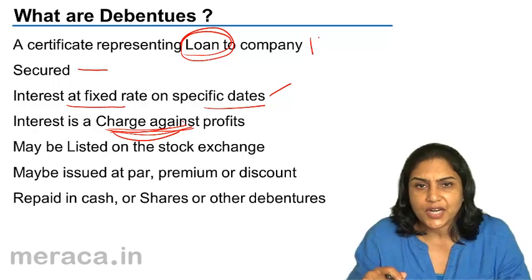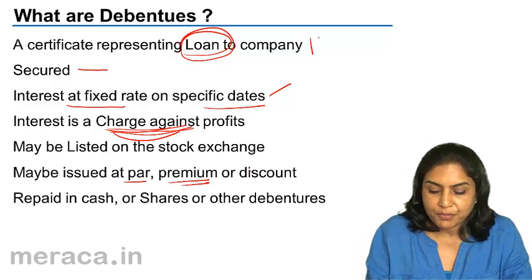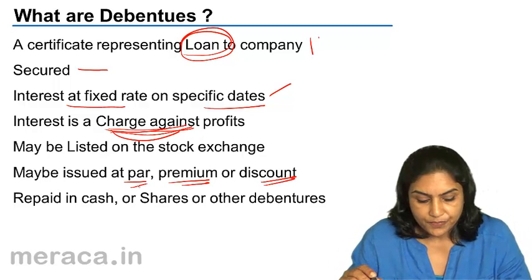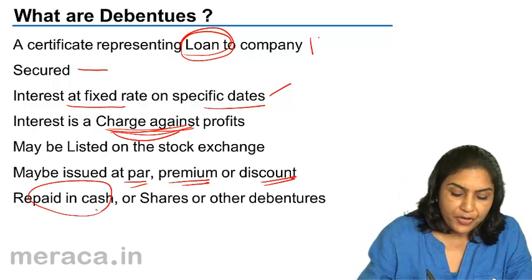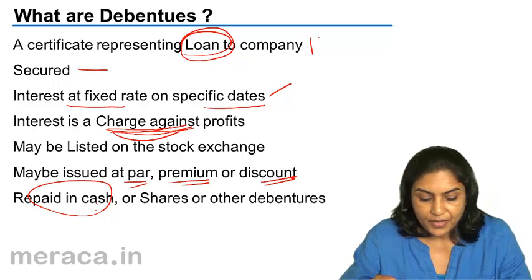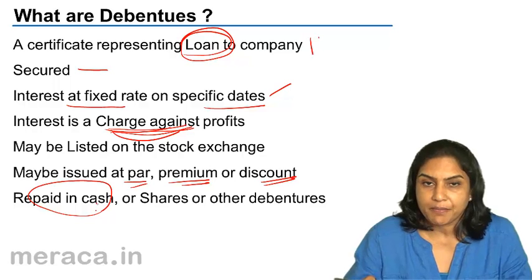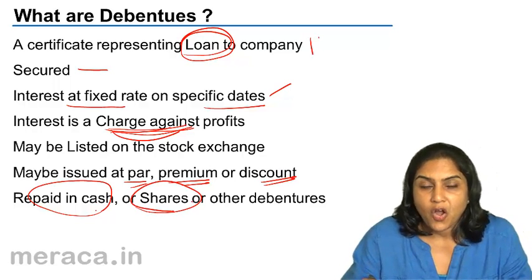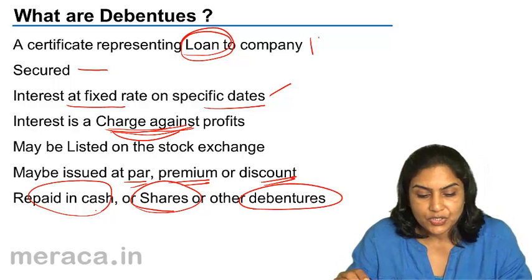Debentures, just like shares, may be issued at par, at a premium, or at a discount. When debentures are redeemed, they are usually repaid in cash. Sometimes, if the debentures are convertible debentures, they are converted into shares or they may even be converted into other debentures.